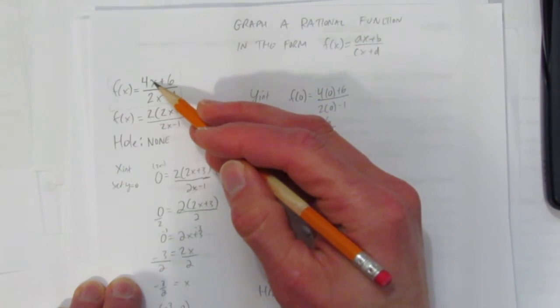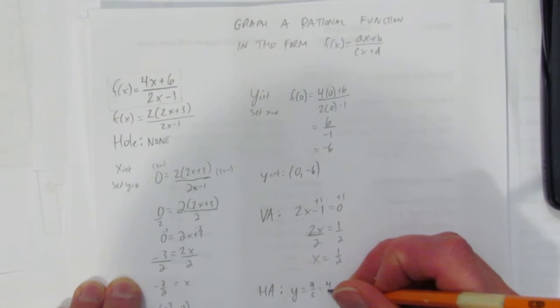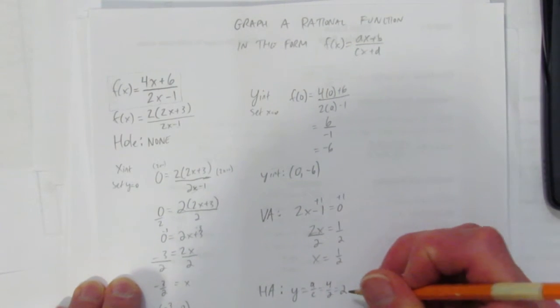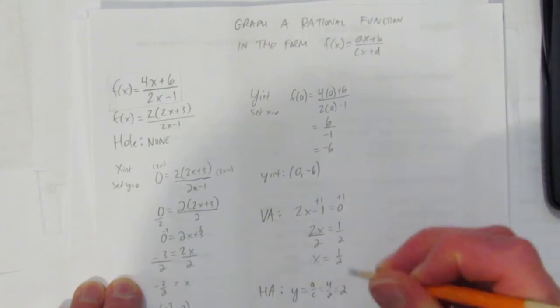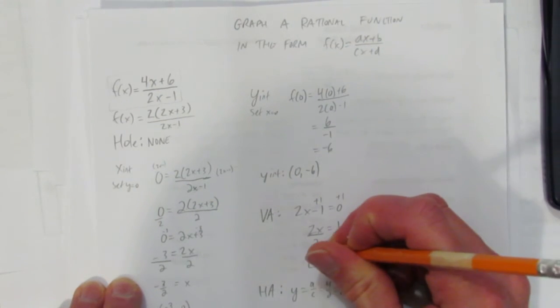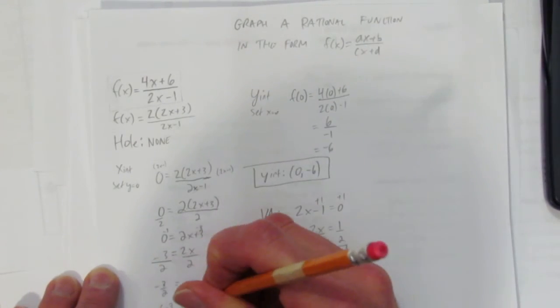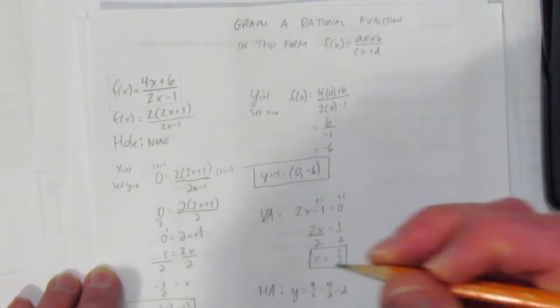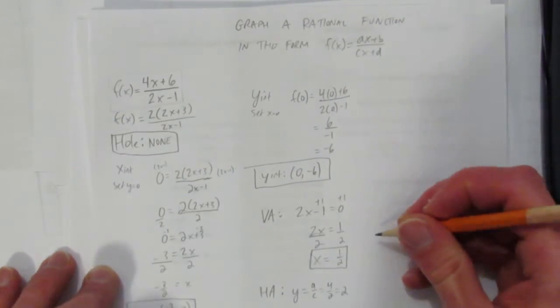The horizontal asymptote, therefore, is y equals a/c. That trick I do remember, but I also make sure I test it by subbing in large numbers. It's whatever happens when you put in large numbers, you just get 4/2, which divides to make 2. So there's a horizontal asymptote at y=2. Now it's time to graph.